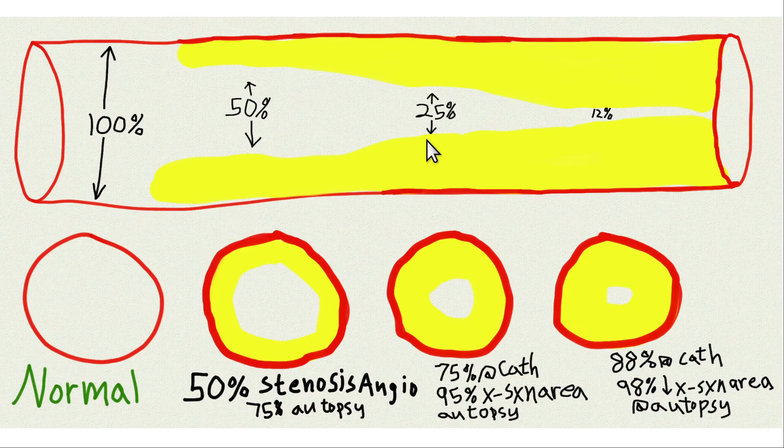In general, he found that when cardiac cath would say there's 50% stenosis, in reality at autopsy in the same patient there was 75% cross-sectional narrowing. The stenosis measurements are not exactly the same, but the point is made: the amount of atherosclerotic disease was routinely significantly worse at autopsy than it was at cardiac cath.